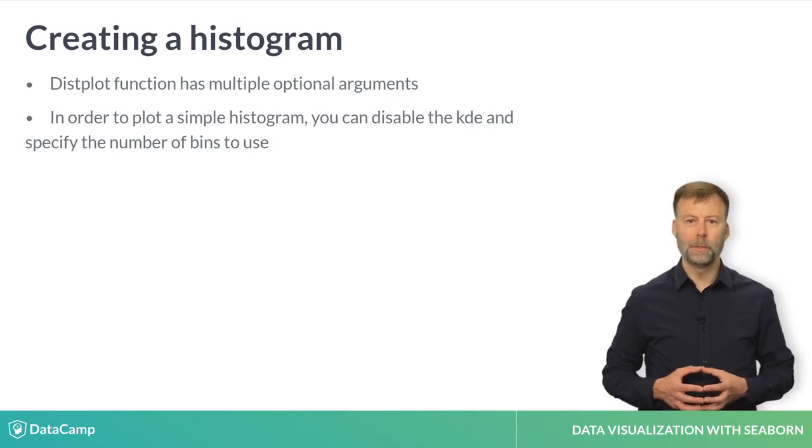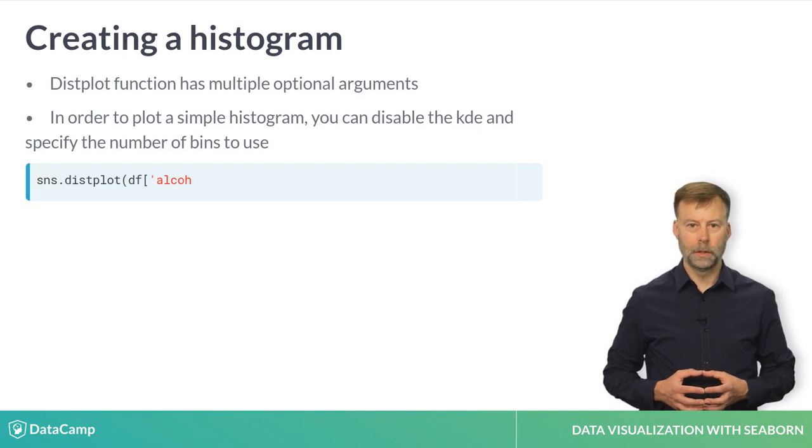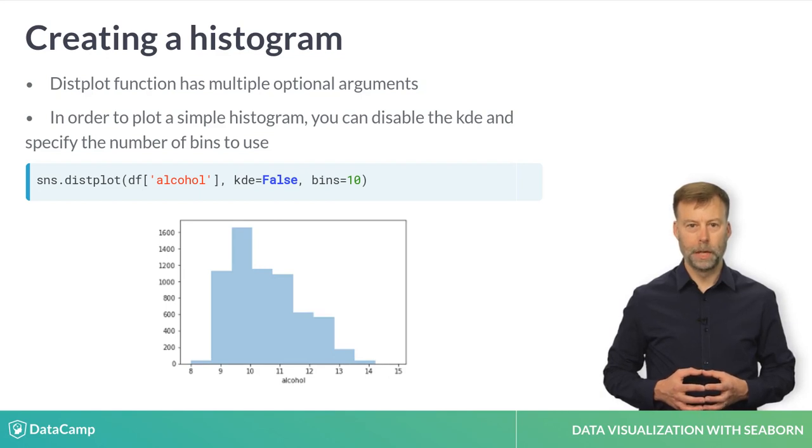The Seaborn API supports customizing the type of plot by using different arguments. In this example, we can use the same distplot function to create a standard histogram and customize the number of bins to further understand how the values are distributed. This basic approach is used by most functions in Seaborn and is a powerful tool for analyzing data quickly.